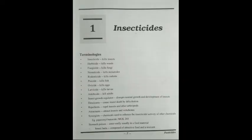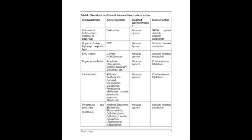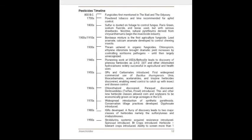The first chapter has terminologies — what is insecticide, rodenticide, adulticide, repellents, etc. Next, insecticide mode of action tables. For example, chemical group is organophosphate, active ingredient is acephate, targeted system is nervous system, and mode of action is cholinesterase inhibitor. Next is the pesticide timeline, which has information about pesticides throughout history.